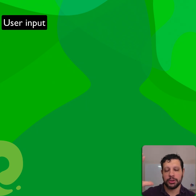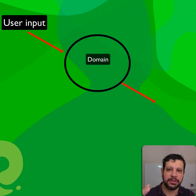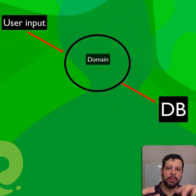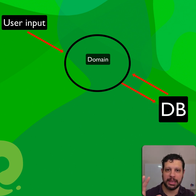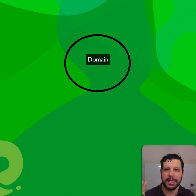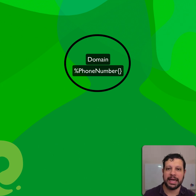When user input comes in, we cast it into a richer domain type, then persist it to the database in the format the database understands. When we pull it from the database, it comes back as a rich domain type. So our domain is dealing with a safely parsed PhoneNumber, and we're safeguarding that at the edges. I hope you like it.